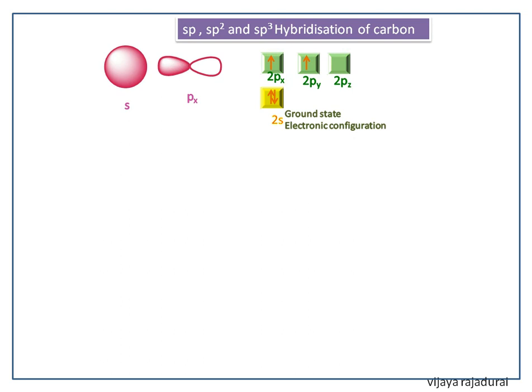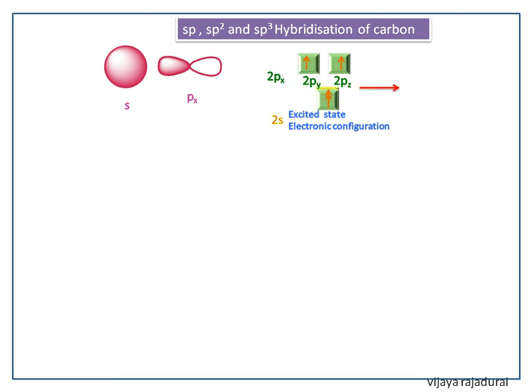For SP hybridization it considers only S and P orbital. When carbon atom combines with another atom it releases energy. This energy is utilized by carbon atom and it goes to excited state. In the excited state one of the two S electrons moves on to 2Pz orbital. Then one S orbital and one P orbital overlap together gives SP hybridized orbitals.